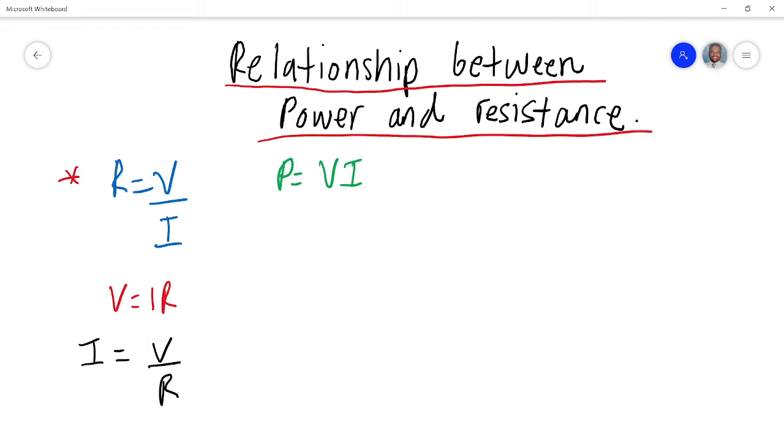So it's important to know how to make one the subject of the formula. In this case, we made R the subject of the formula. And in here, we made V the subject of the formula. And in the third one, we made I the subject of the formula.